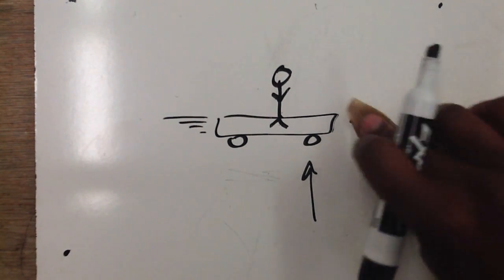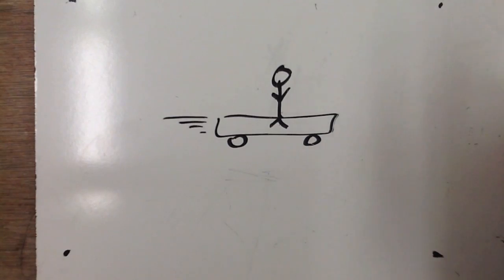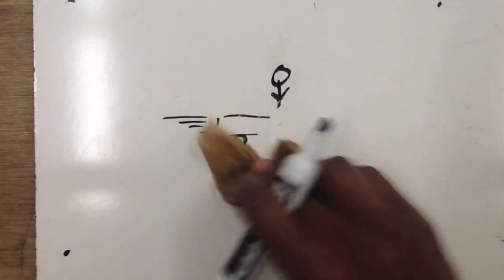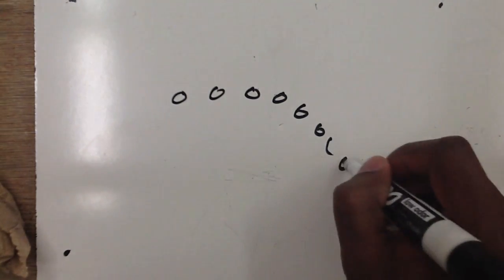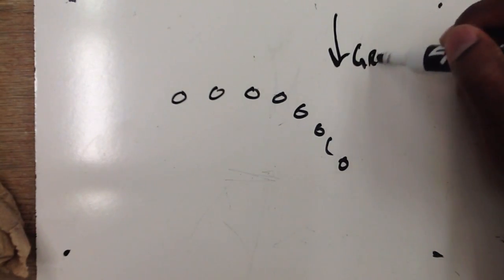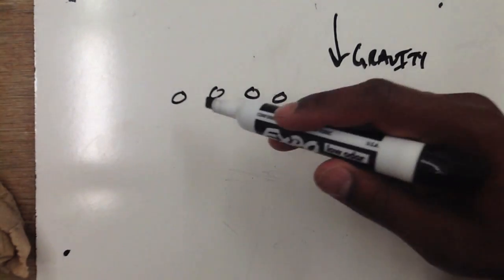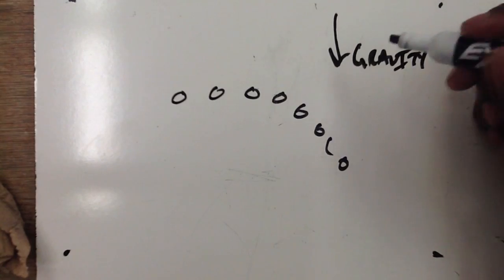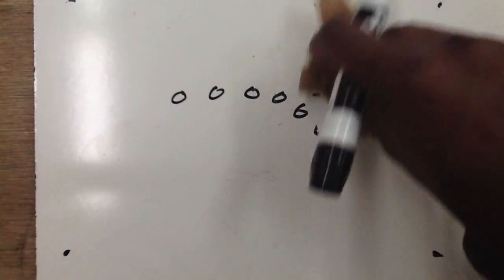Forces applied to moving objects — unbalanced forces — will cause an object to either speed up, slow down, or change direction. For example, if someone tosses a ball through the air, it doesn't go in a straight line like it would in space. The ball curls down towards the earth because the unbalanced force of gravity acts upon it and causes it to change direction. Without gravity, it would just continue in a straight line.